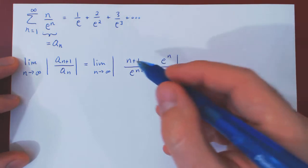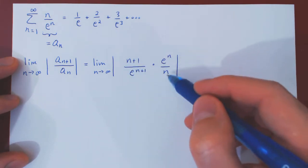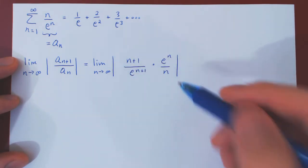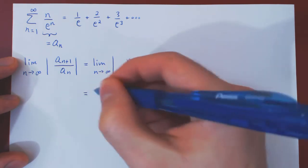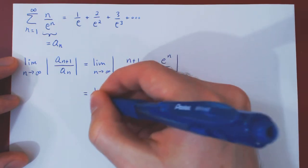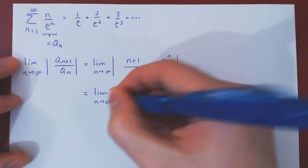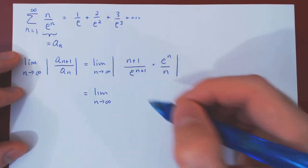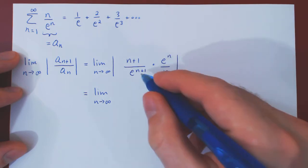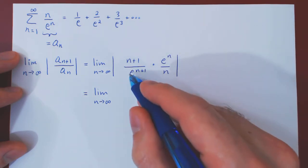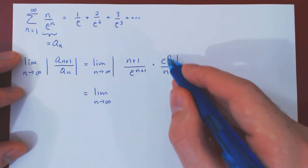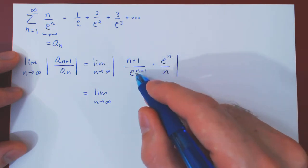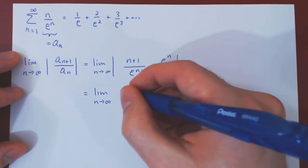So two things. As every term in the expression is positive, we can drop the absolute value. And now we can simplify by combining the terms that go together. So e to the n over e to the (n+1), well we can subtract the exponents. So e to the (n+1) minus n will leave you with an e on the bottom, so 1 over e.